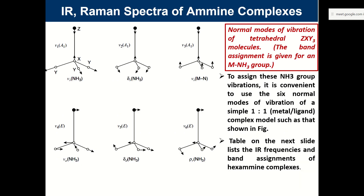Now moving to amine complexes. Whenever we discuss these things, we first try to understand the possible vibrational modes in the ligand, and when the ligand combines with the metal, what new vibrational modes arise. This is an example of metal binding to an amine NS₃ group - you can treat it as the metal M with ammonia NH₃. The first mode is the stretching vibration.